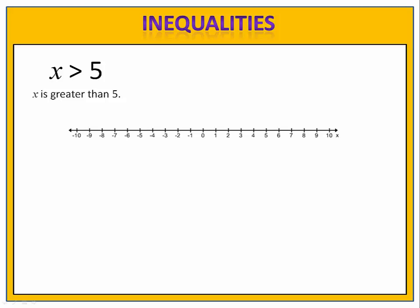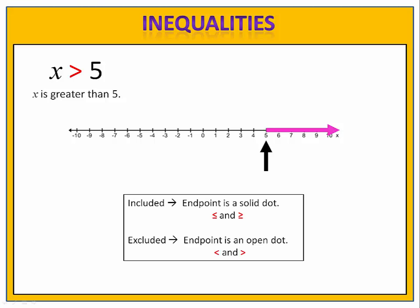This is simple to do. All we need to do is take a number line and shade everything that's greater than five. We have to be careful at the end point, specifically at five. For someone looking at this graph, it's hard to tell whether or not five is included. We clarify this with a rule: if the point is included, we make a solid dot; if the point is not included, we make an open dot. Because in the set x is greater than five, five is not included, we make an open dot at five. That clarifies any confusion that our reader might have.